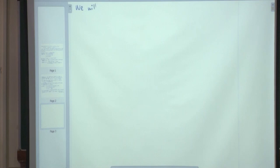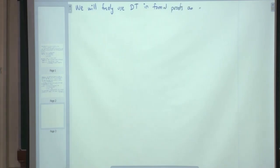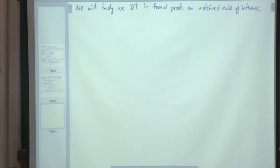We will freely use DT in formal proofs as a derived rule of inference. A justification for a line, a reason for a line, can be DT, where we are simply transferring something from left to right or right to left. However, do not use it for proving little s implies little s.